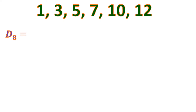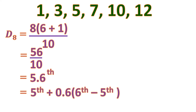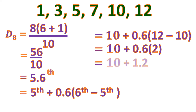Let's find the 8th decile. D8 = 8 times (6 plus 1) all over 10 = 8 times 7 = 56, divided by 10 = 5.6 — the 5.6th number. So it's the 5th plus 0.6 of the difference between the 6th and 5th: the 5th number is 10 and the 6th is 12. 10 plus 0.6 times (12 minus 10) = 10 plus 0.6 times 2 = 10 plus 1.2 = 11.2. This means 80% of the data is less than 11.2.